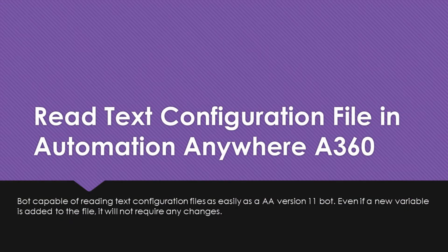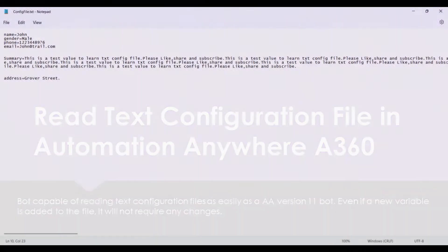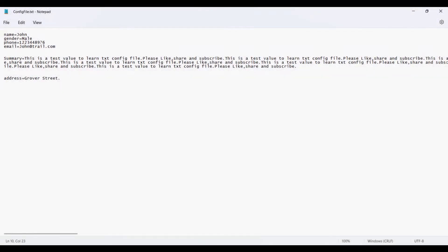Hi guys, welcome to RPA Stuff. In today's video we are going to create a bot that will read a text configuration file with the same convenience we had with Automation Anywhere version 11. Our approach will be the same as the XML configuration file video I have posted — I will add a card for it. I am going to use a sample configuration text file for the demo.